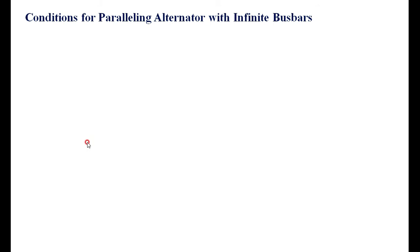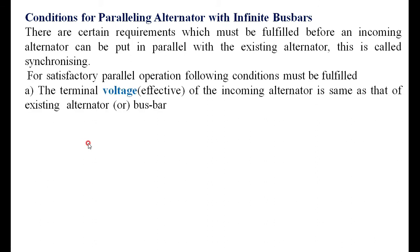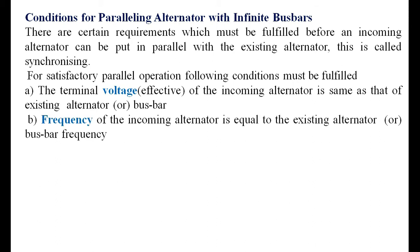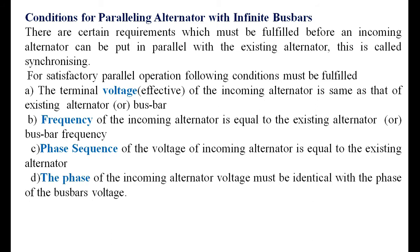We know the conditions for parallel operation: first, the terminal voltage of the incoming alternator must be the same as the existing alternator; second, the frequency must match; third, the phase sequence of the incoming alternator must be equal to the existing alternator on the bus bar; and fourth, the phase of the incoming alternator voltage must be identical with the phase of the bus bar voltage.